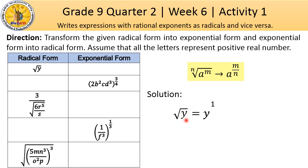And then, since we use this square root here, Understood also na 2 ang index nito, Kahit walang number na nakikita. Therefore, the answer is y raised to 1 half. Again, ang numerator 1 ay galing sa radical form. At ang denominator 2 ay galing sa index or order ng ating radical form.